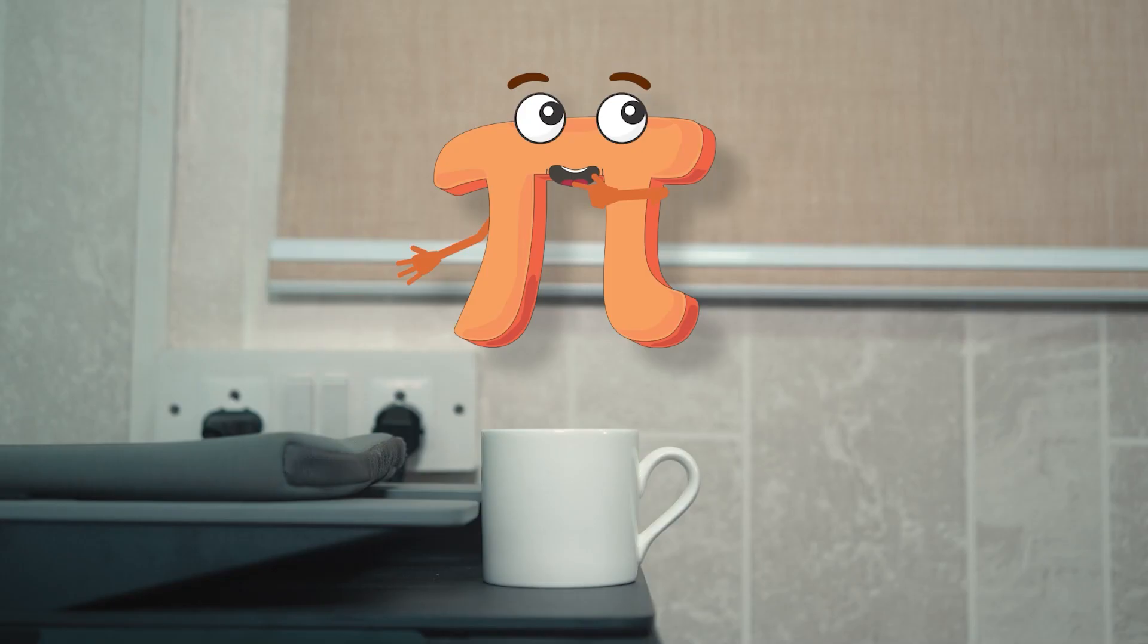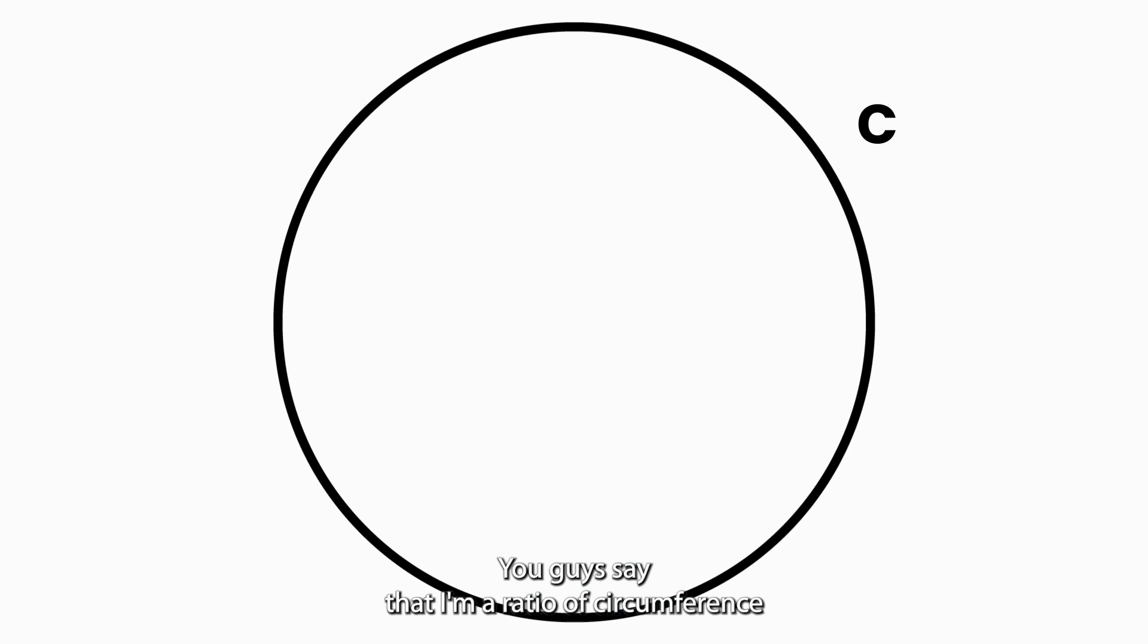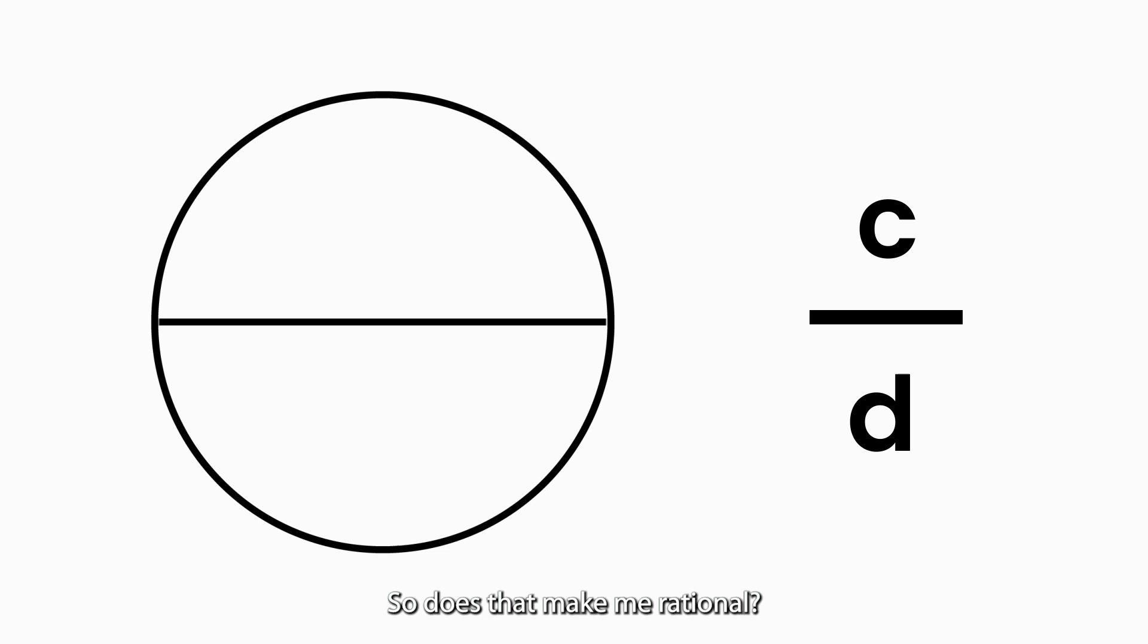Now that's something you humans seem to be stuck on forever. You guys say that I am a ratio of circumference and diameter of a circle C by D, which is a P by Q form. So does that make me rational?